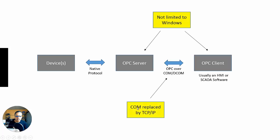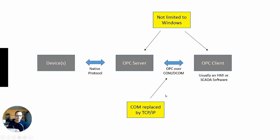The second aspect is that COM has been replaced by TCP/IP. There's TCP binary, HTTP, HTTP XML, and all that stuff, but under the hood it's still TCP/IP. So the client and server will now communicate not with COM/DCOM, but TCP/IP. That's an aspect to be investigated — how does that work?